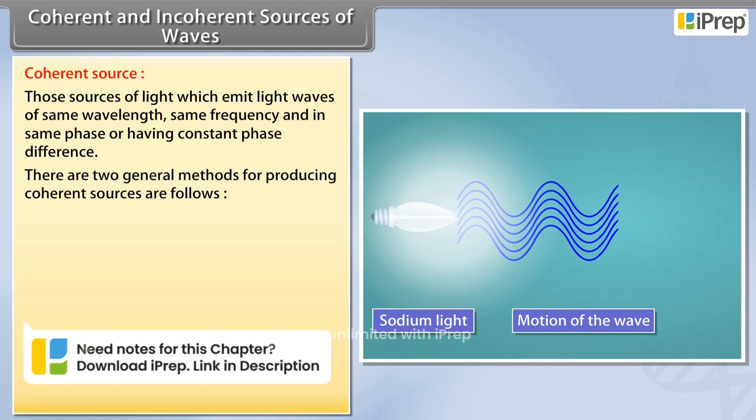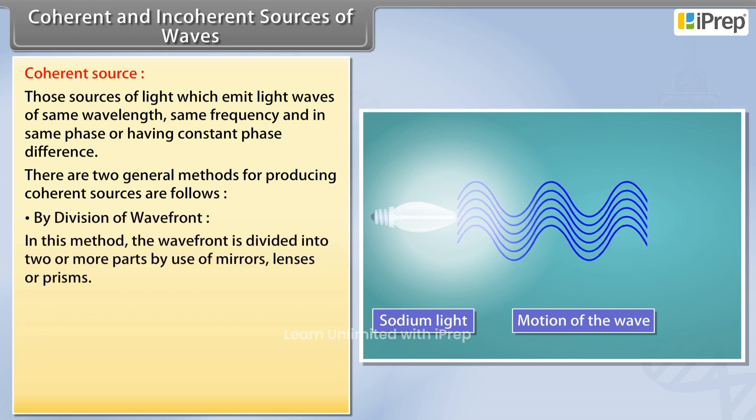There are two general methods for producing coherent sources as follows. By division of wavefront, in this method the wavefront is divided into two or more parts by use of mirrors, lenses, or prisms.